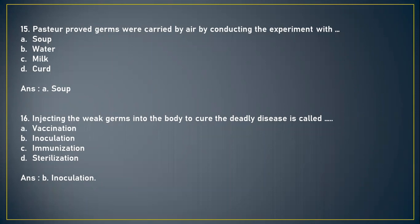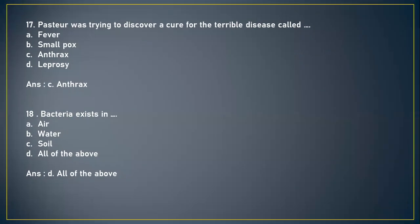Next question: Pasteur proved germs were carried by air by conducting an experiment with — A) soup, B) water, C) milk, or D) curd. The correct answer is option A, soup. Next: Injecting the weak germs into the body to cure a deadly disease is called — A) vaccination, B) inoculation, C) immunization, or D) sterilization. The answer is option B, inoculation.